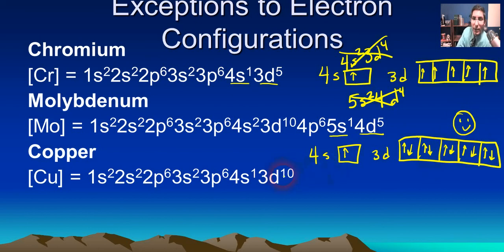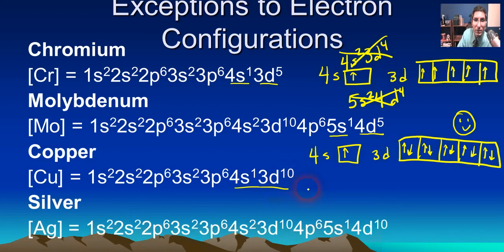Now, an element directly underneath it does basically the same thing, silver. You'd expect it to be 5s2 4d9, but it's not. It does essentially the same thing. It takes that last s electron and promotes it to d. So it's actually 5s1 4d10. So these are some exceptions to the expected electron configurations that you need to know in this class.